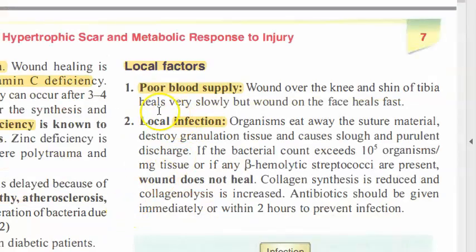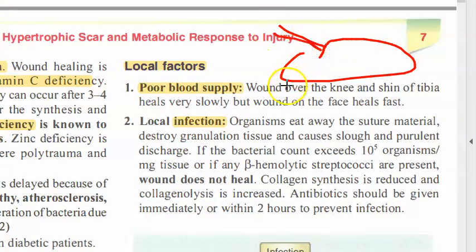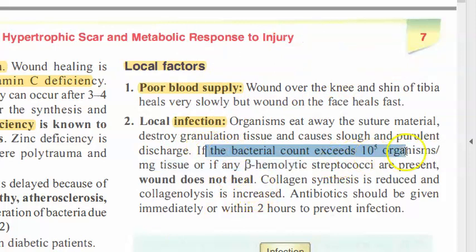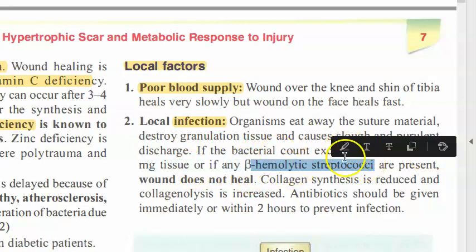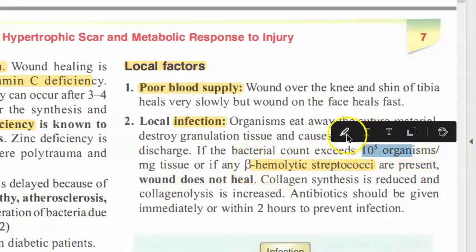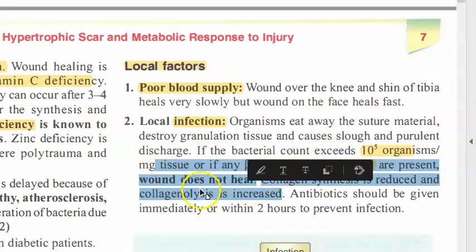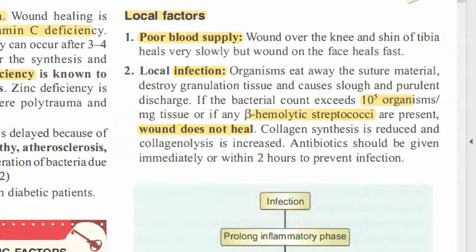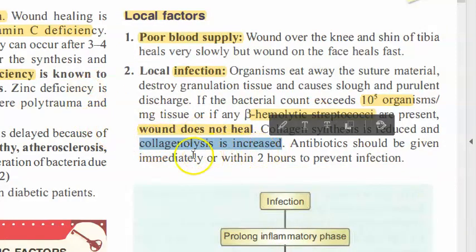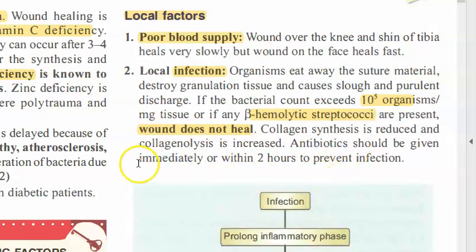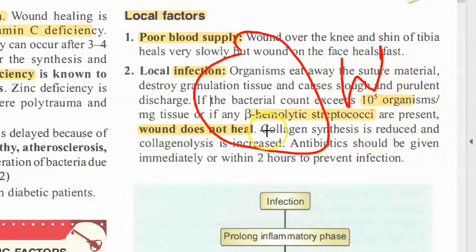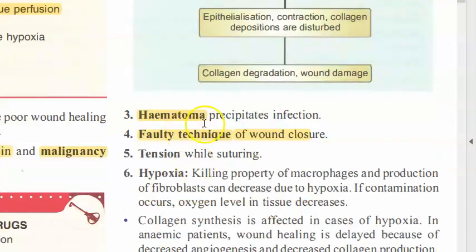Now for local factors — these affect the wound site directly. Poor blood supply at the wound site prevents healing. Local infection is also a factor: if bacterial count exceeds 10 to the power of 5 organisms — particularly beta-hemolytic Streptococcus — wound healing won't occur. Collagen synthesis gets reduced and collagenolysis increases, so antibiotics must be given immediately. This relates to the classification of clean, dirty, and contaminated wounds.